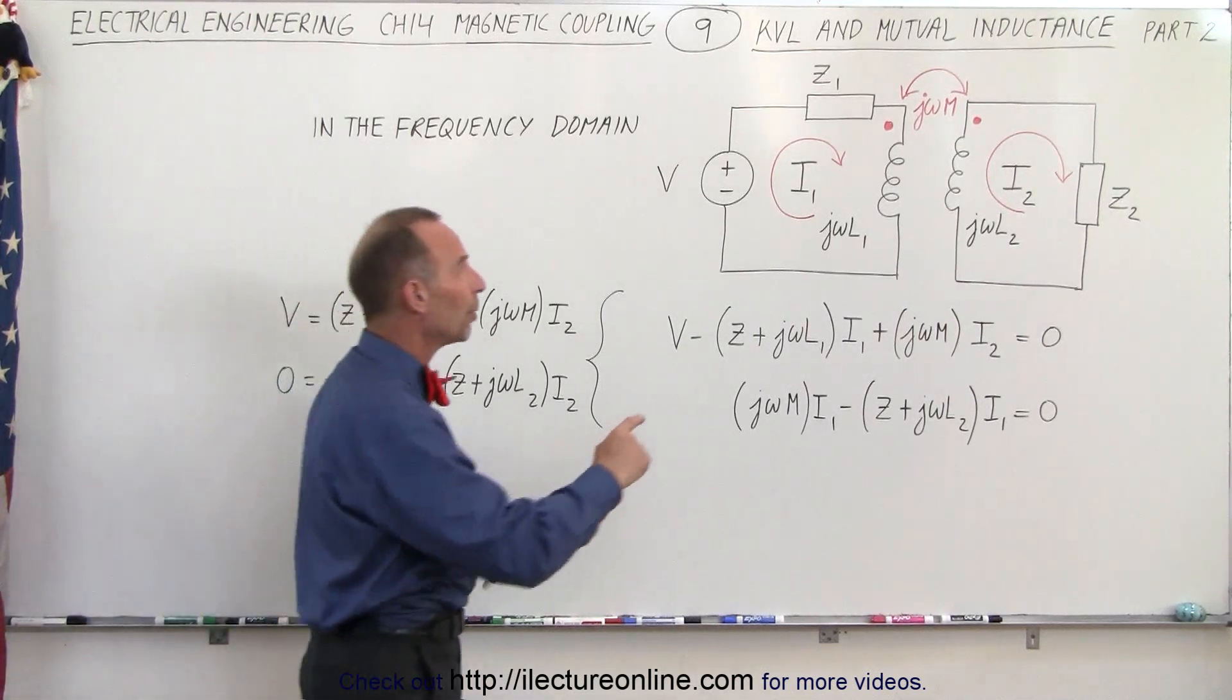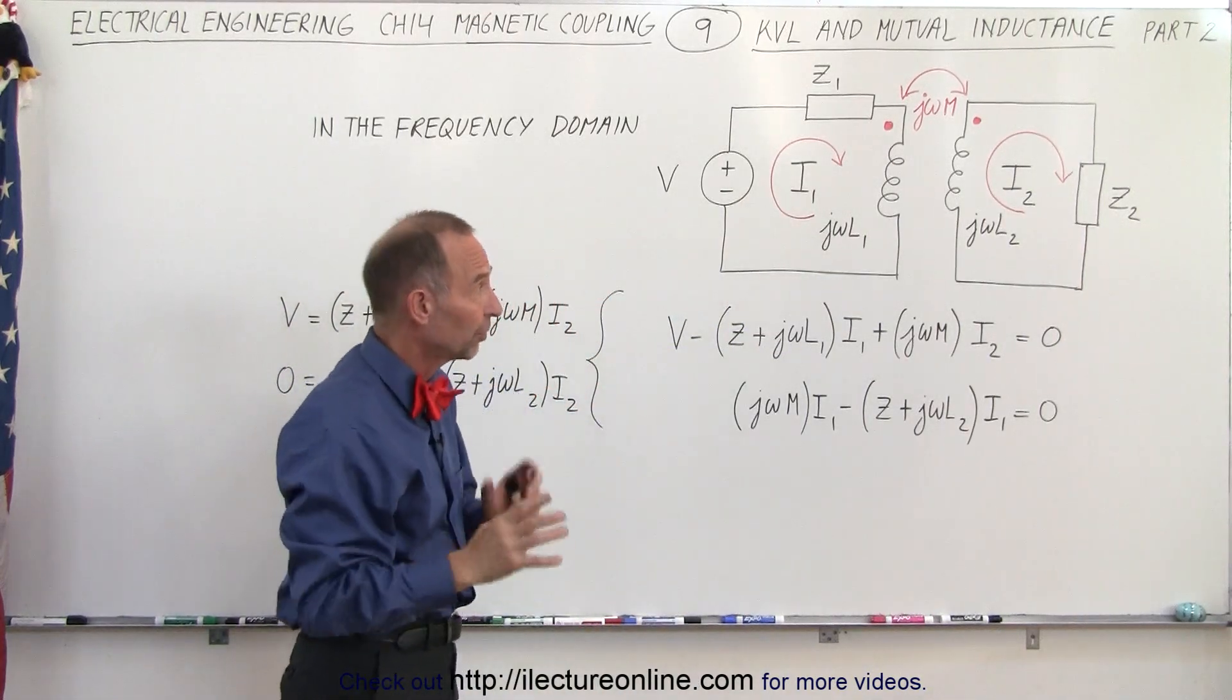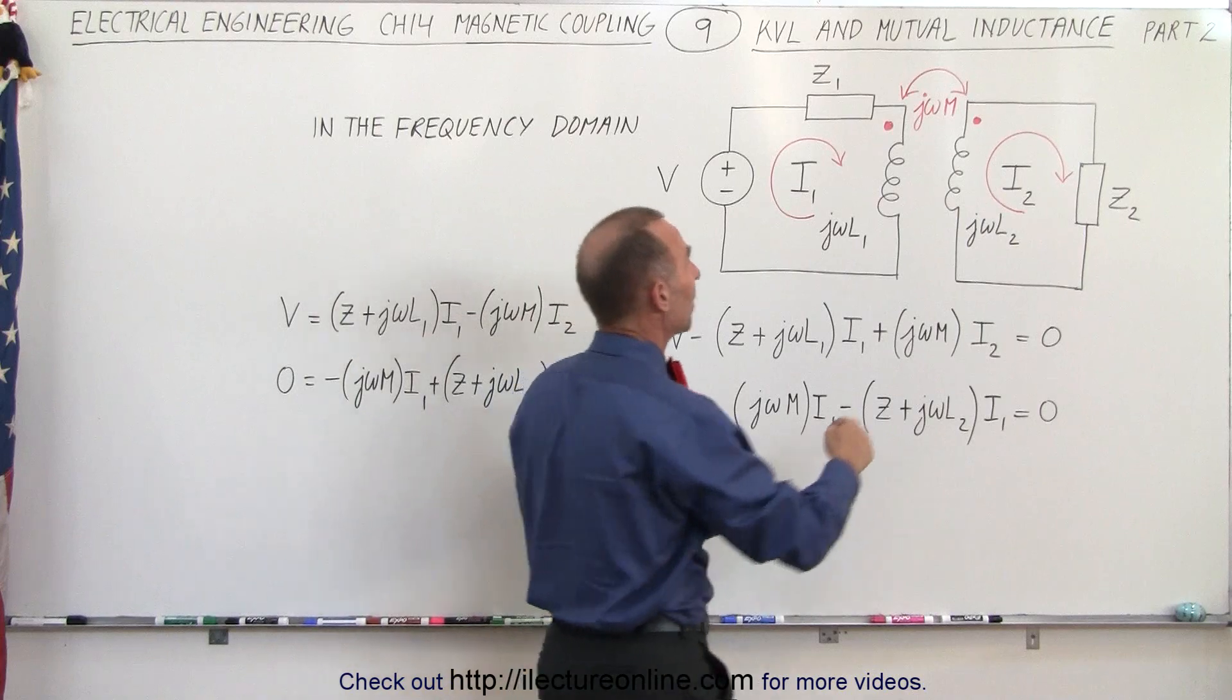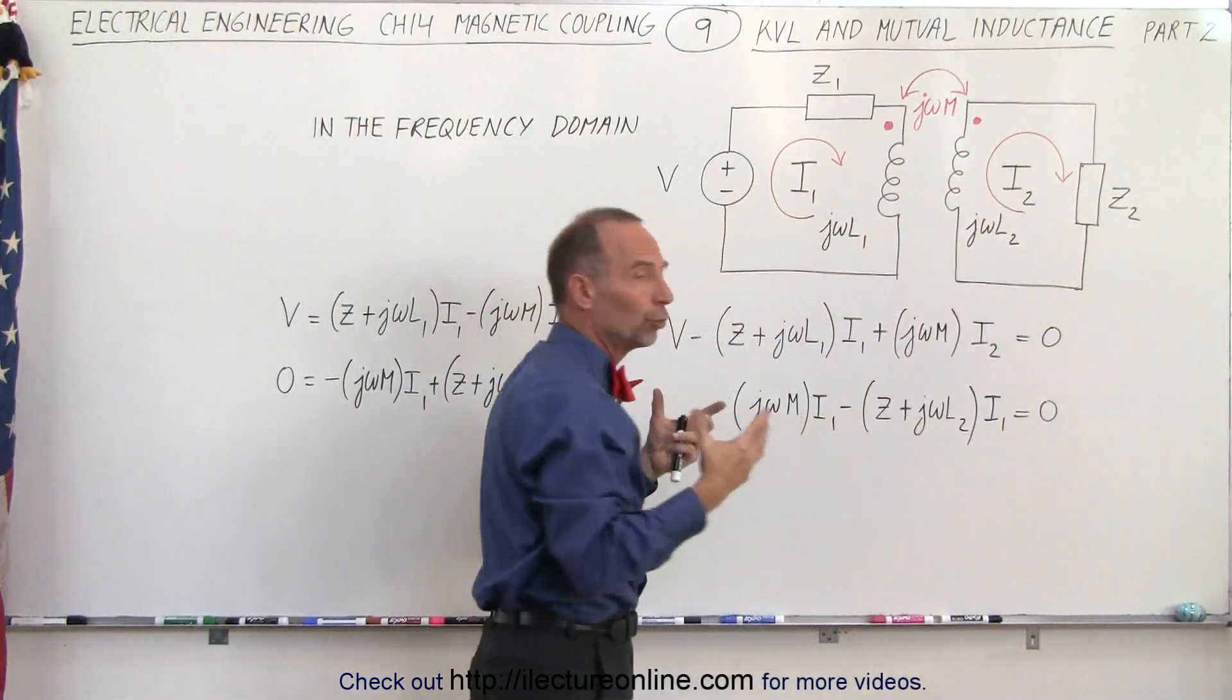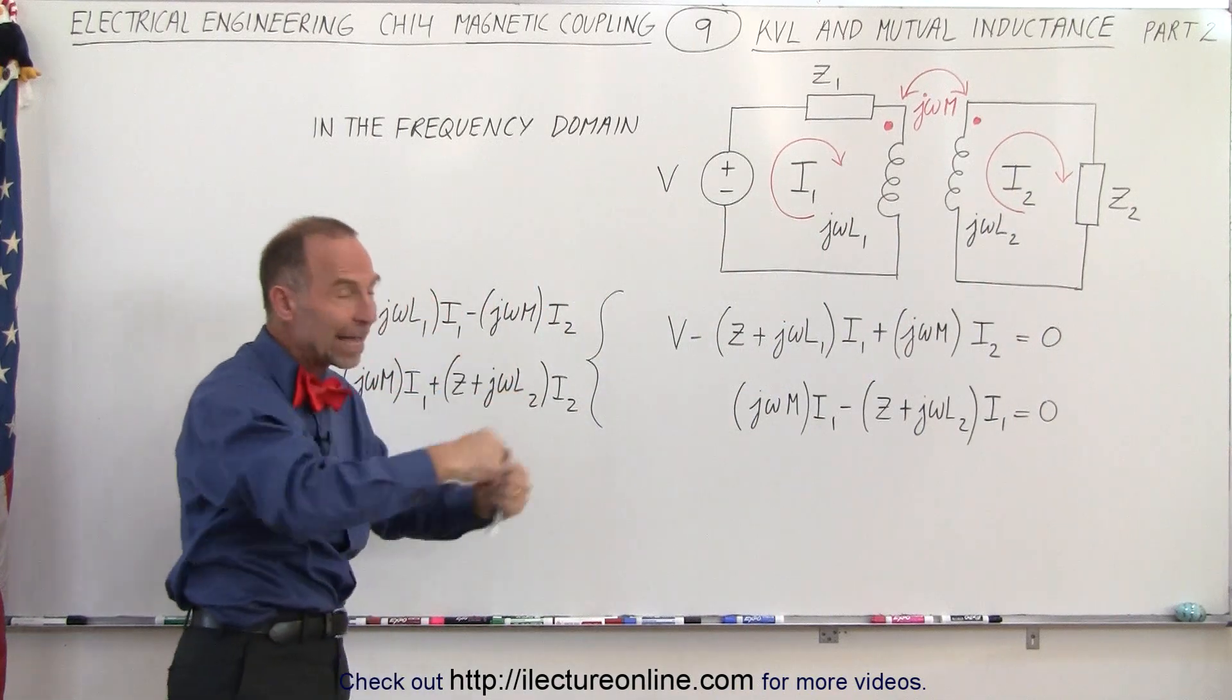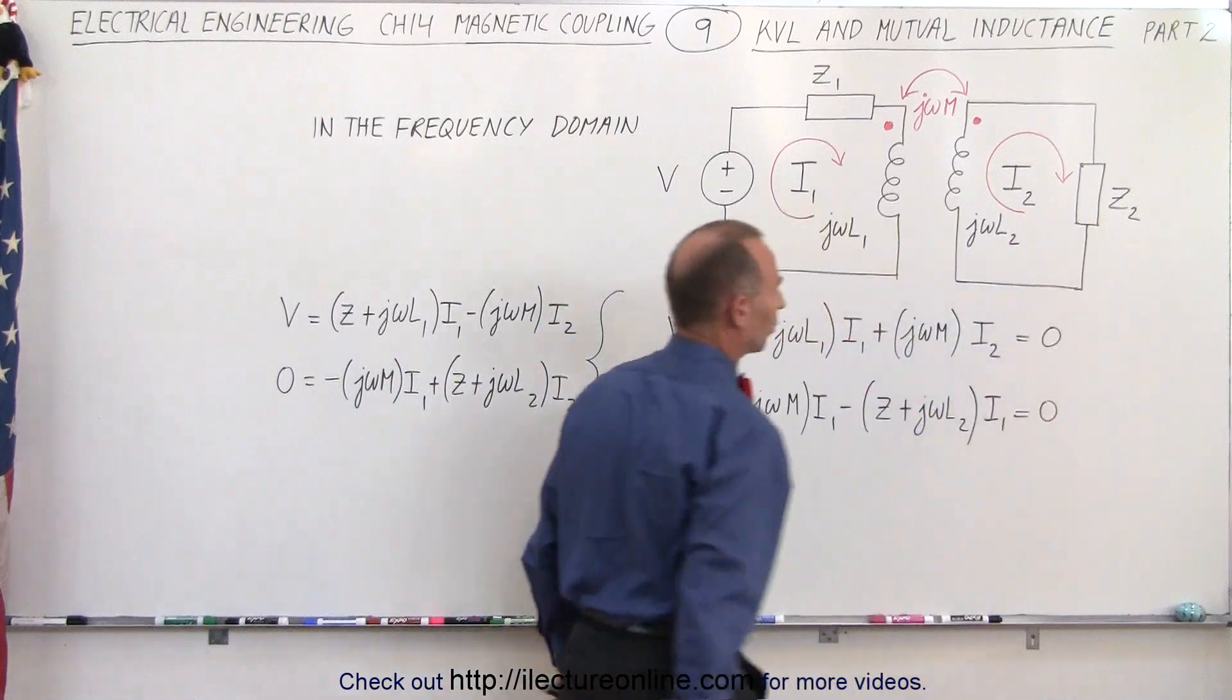What we're going to do now is simply add up all the voltages in each of the two circuits. Notice a couple of differences from the previous example: the current in both I1 and I2 in the two circuits are in the same direction, clockwise, and there's no voltage source in the second circuit.